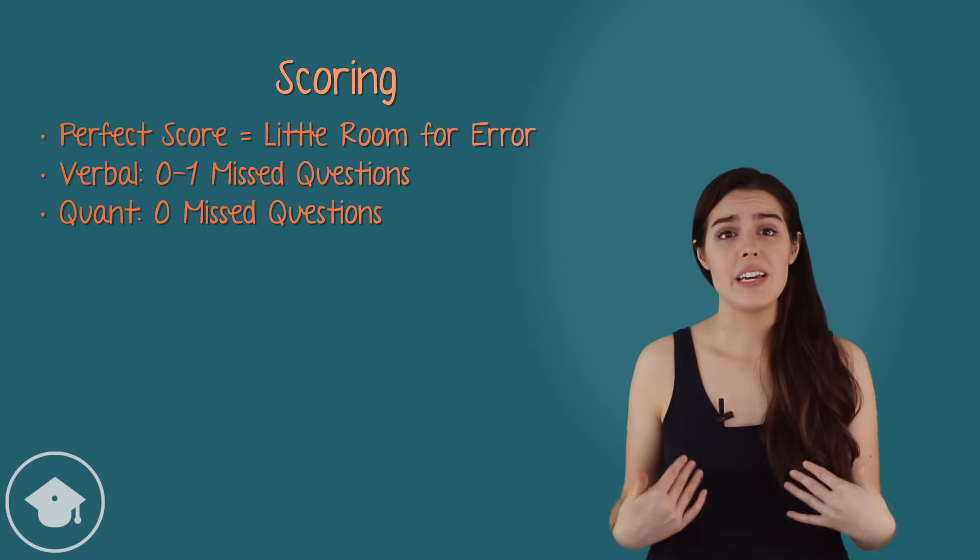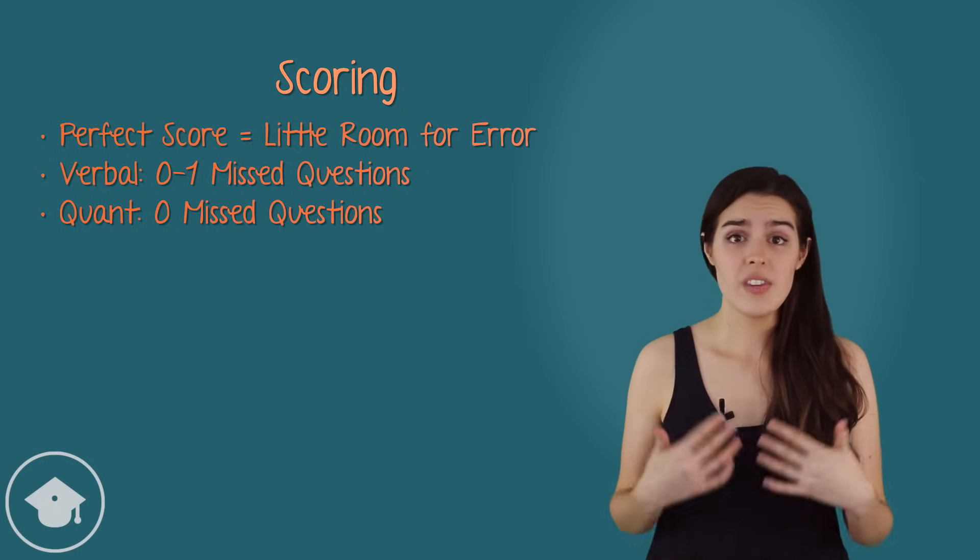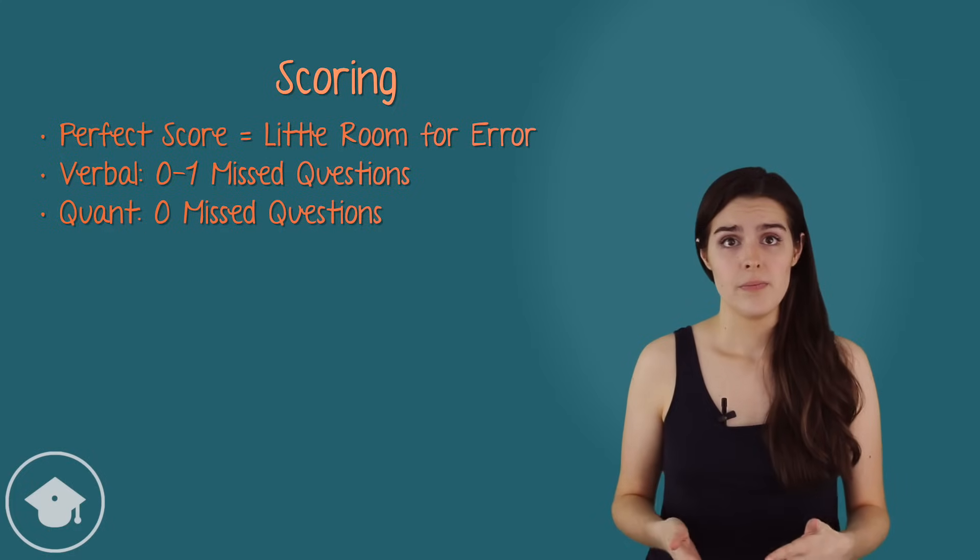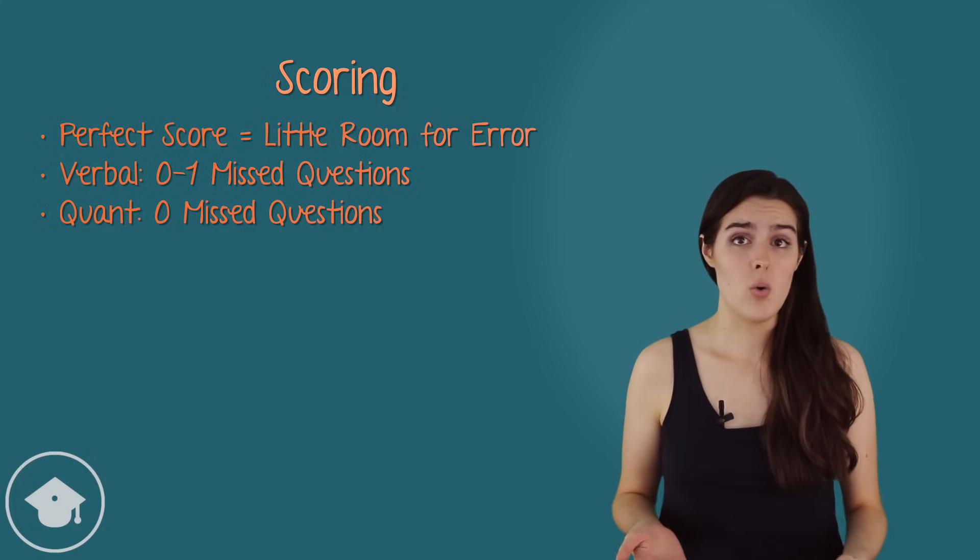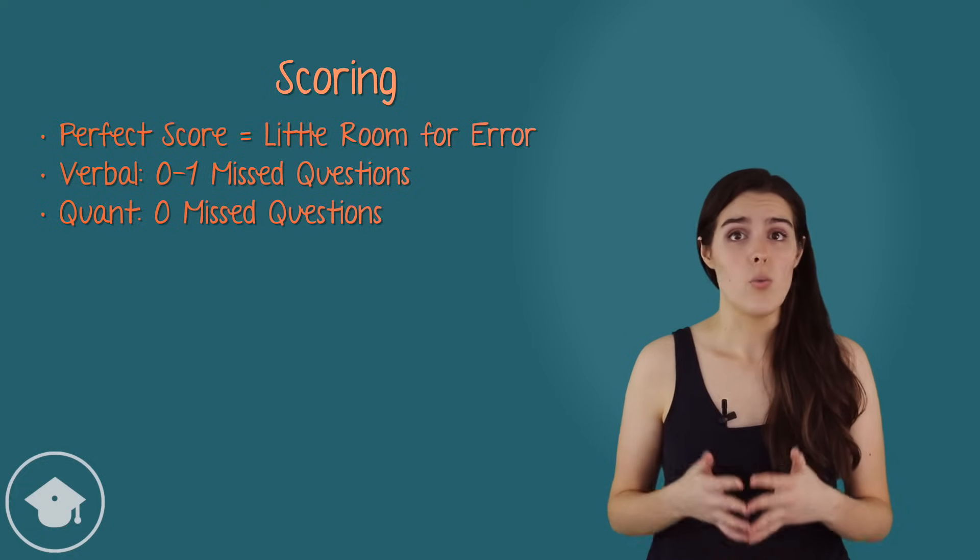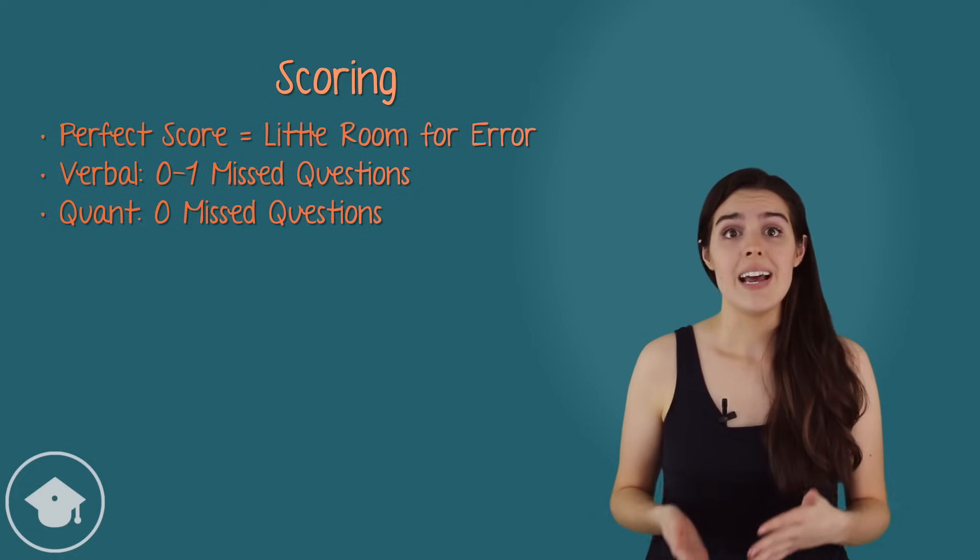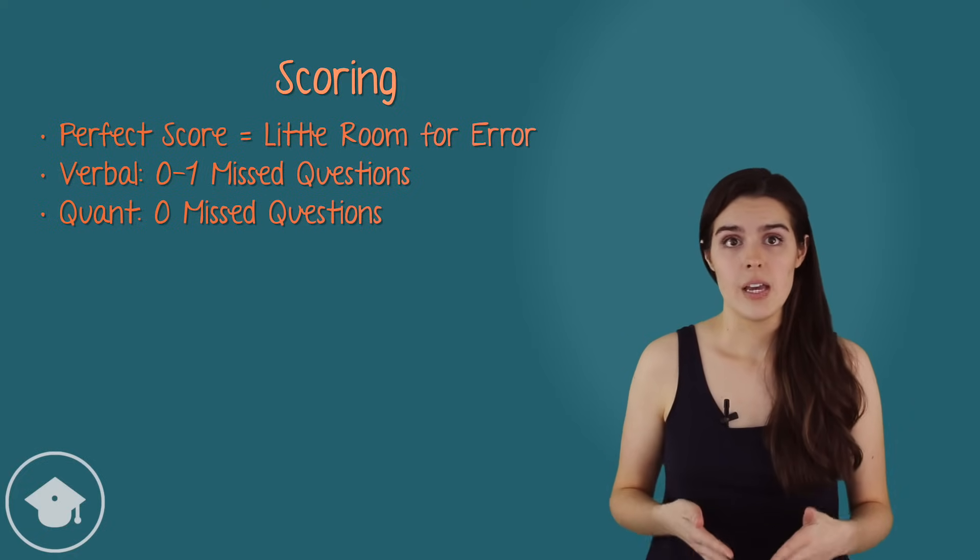So what does this indicate about my scores? I got a 170 on verbal. So because verbal is typically more forgiving than quant, there's a good chance that I missed one question across the two sections and still got a perfect score.